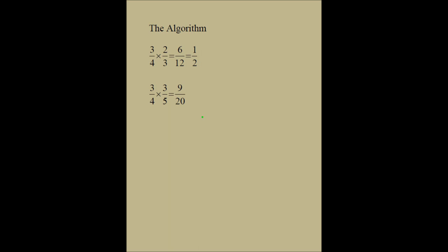This is an algorithm. What is an algorithm? An algorithm is a rule that helps you get to an answer. It doesn't have to have any reasoning behind it. Now, if the algorithm is valid, there's a lot of reasoning behind it. But the person using the algorithm doesn't have to know that reasoning — and that's one of the problems with using an algorithm blindly.